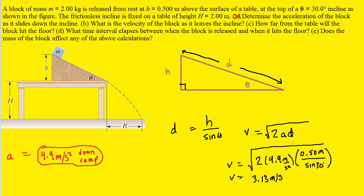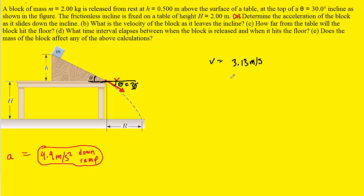Velocity is a vector, so we also need the direction. The block slides directly off the edge of the ramp, so the final velocity points in that direction. We extend the tabletop horizontally, and from geometry, if the incline angle is theta, then the velocity angle below the horizontal is also theta — 30 degrees. So the final velocity is 3.13 meters per second at 30 degrees below the horizontal. That is the correct answer to part B.